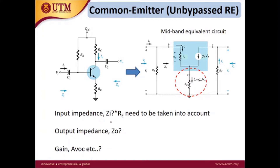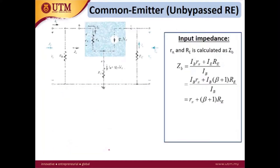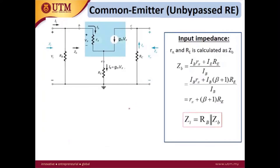So the difference is we now have this RE present. When we have RE, the input impedance will change because RE must be taken into account. We also need to analyze the output impedance and the gain. Now we want to analyze the common emitter unbypassed configuration.